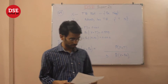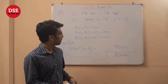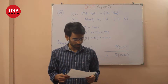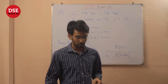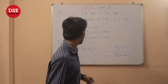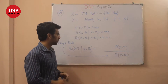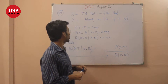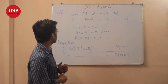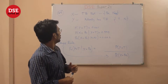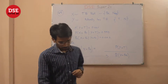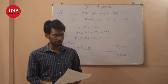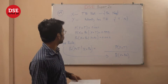Coming to question 49. This is a pretty standard question which asks about Bayes' rule and the total probability property. We are given that there is a test for tuberculosis.